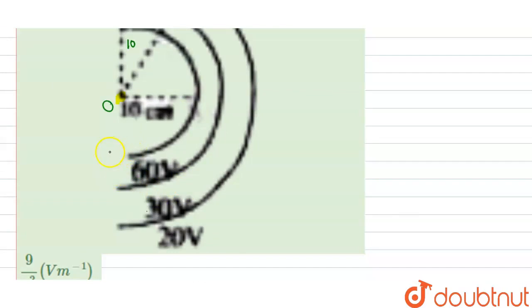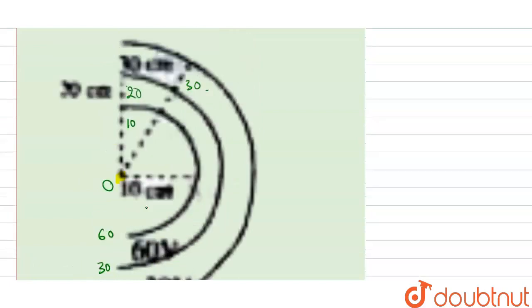And potentials are given here, that is 60 volt here first one, and this is 30 volt and this potential surface has 20 volt. Now we have to find out the electric field at a distance r.